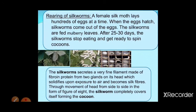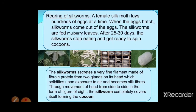The larva produces saliva, and using that saliva it wraps itself inside a cocoon. With the help of air and heat, this saliva becomes silk. The silkworm produces a very fine filament from its gland, and when exposed to air it becomes a silk fiber. This is how the cocoon is formed — this is the rearing of the silkworm.